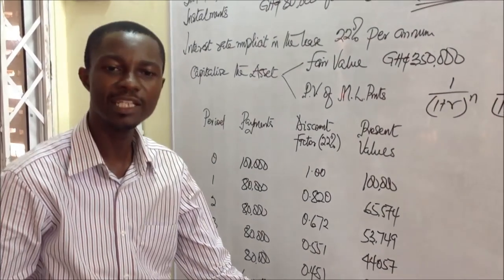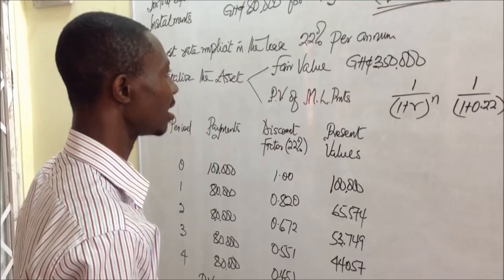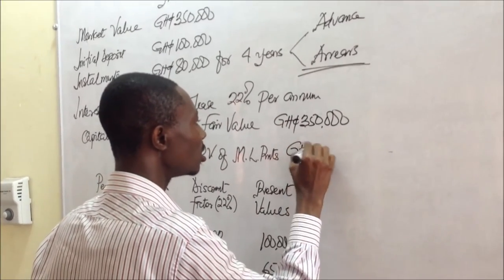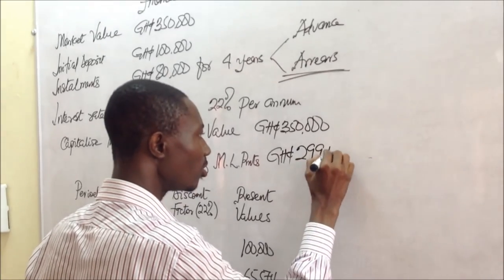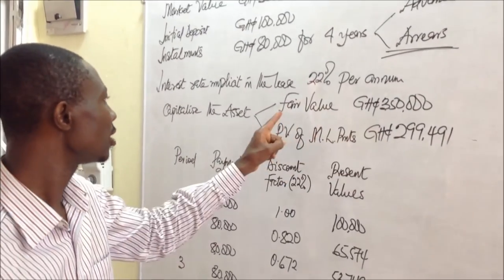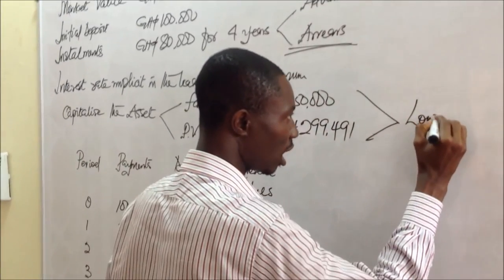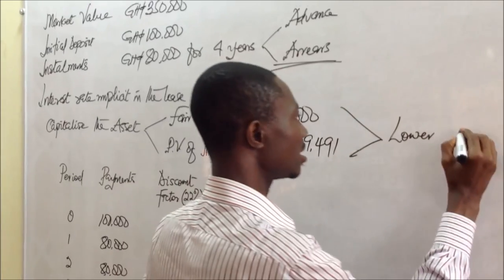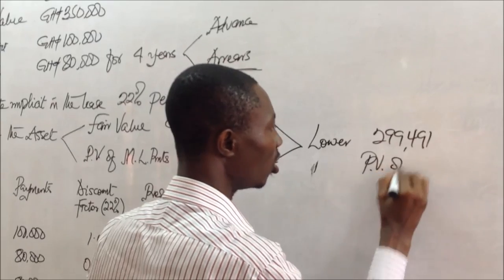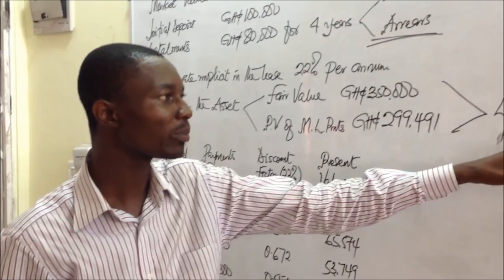We sum the various present values and that gives us $299,491. This is the figure we call the present value of minimum lease payments. The fair value is $350,000. Our criteria is to look out for the lower of the two. The lower of the two is $299,491, which is the PV of the minimum lease payments. From this illustration, the amount I am going to capitalize would be $299,491.